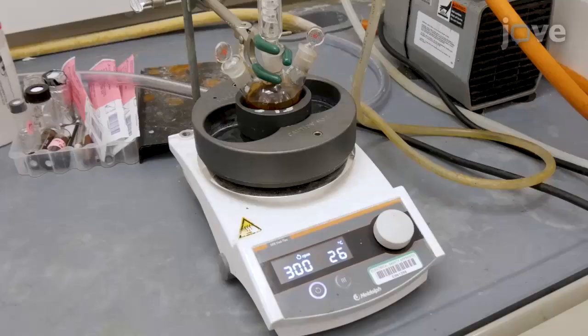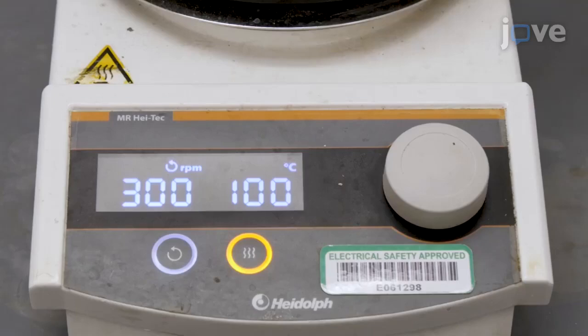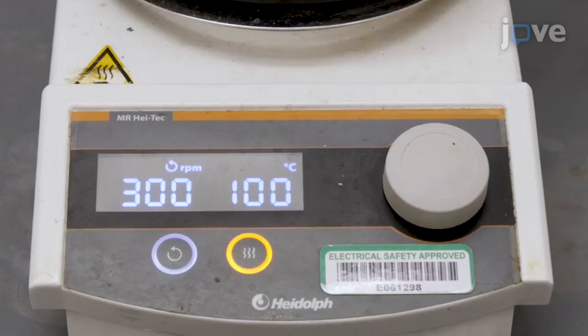Then set the hot plate to 100 degrees Celsius. Continue stirring the mixture at 100 degrees Celsius until the palladium acetate has dissolved completely, which usually takes about 30 minutes.